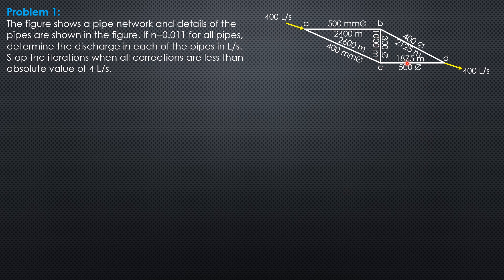There is 400 inflow and 400 outflow. The assumed discharge: for the 500 mm pipe versus the 400 mm pipe, I assume 0.23 cubic meters per second, so the other should be 0.17 cubic meters per second to make 0.4. Then 0.16, and since this is 0.23, this should be 0.07. Then 0.17 plus 0.07 equals 0.24 for CD, so that 0.16 plus 0.24 equals 0.4 cubic meters per second.